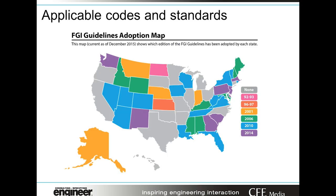The FGI guidelines adoption nationally varies by state, with various editions applicable in different states. As designers apply new criteria to new facilities, depending upon the classification of the healthcare building, it's important to recognize where you are geographically and what has been adopted.